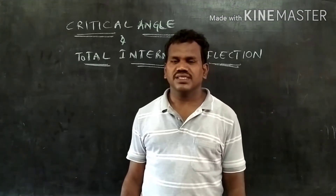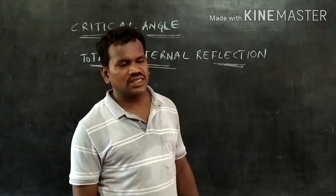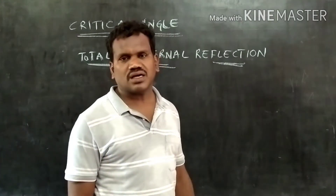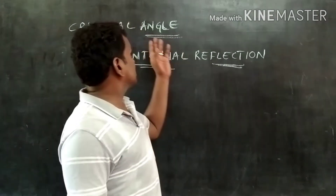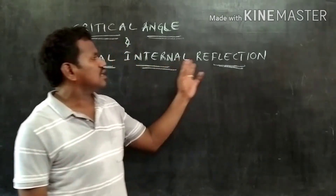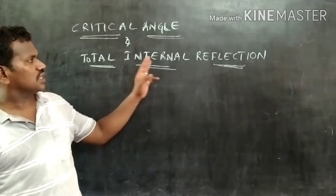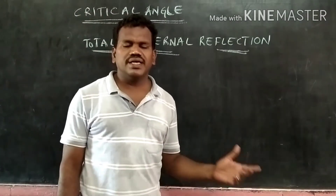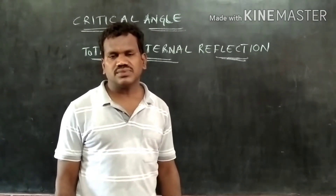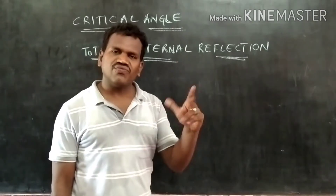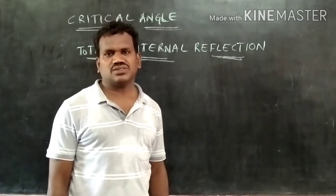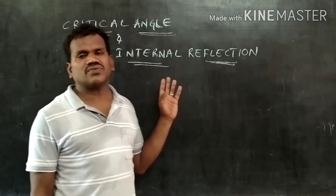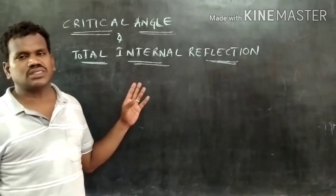Hi students. In this video we are going to discuss every one of the important properties of light, that is critical angle and total internal reflection. Before this, we discussed many properties of light: refraction, reflection, interference, and dispersion. This is one of the very important aspects of light that we are going to discuss.